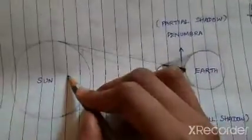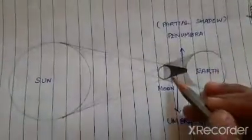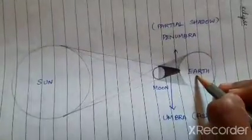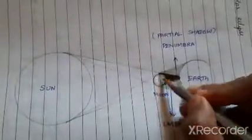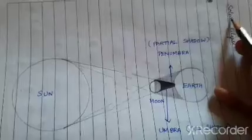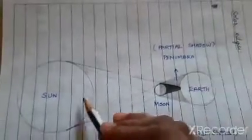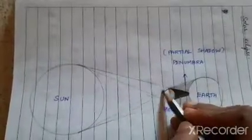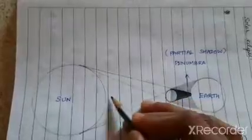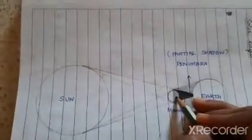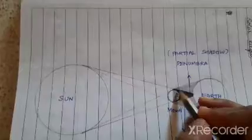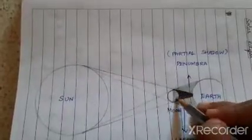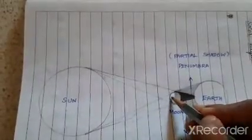So now you have the sun, with the moon in between and the earth at the other end. Whenever the moon is in between, that becomes your solar eclipse. The sun is our light source. When the light of the sun falls on the moon, the moon's surface which faces the sun will receive the light, but the back surface would be in the dark region. That is why I have shaded half of the moon.